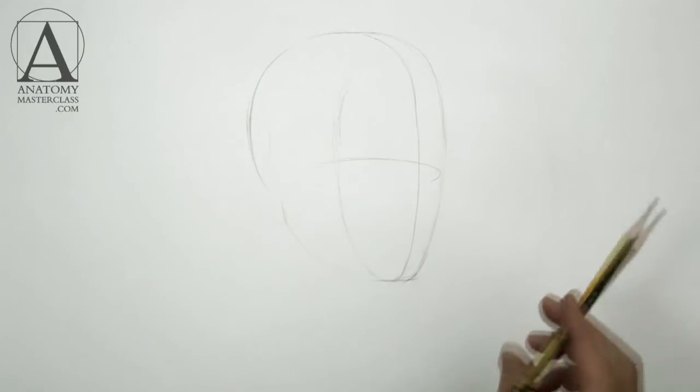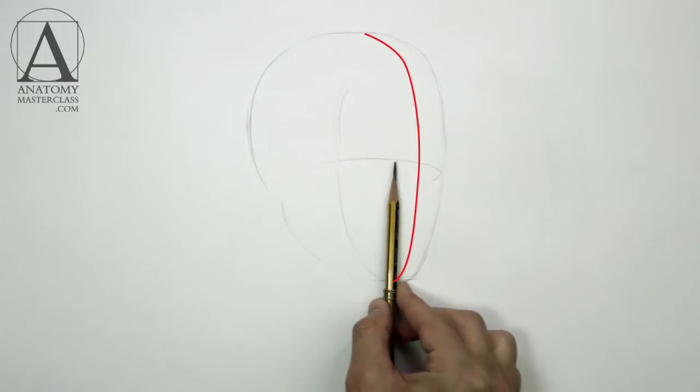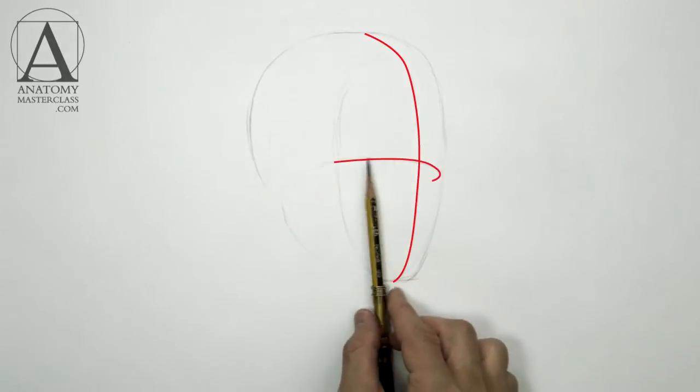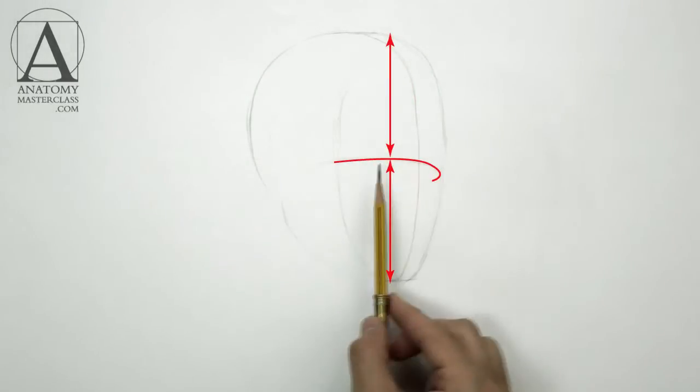Two other important lines you need to depict in constructive drawings is the vertical line of the face, which is the symmetry line, and the eye line. The eye line divides the height of the head in half.